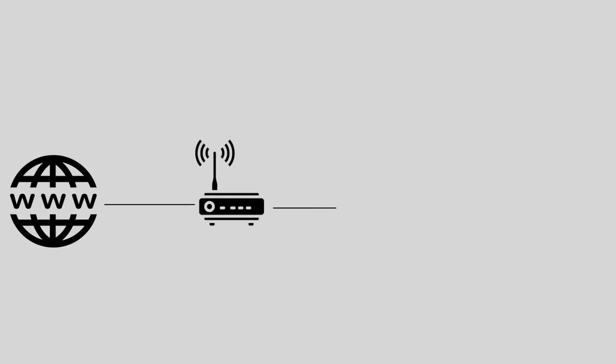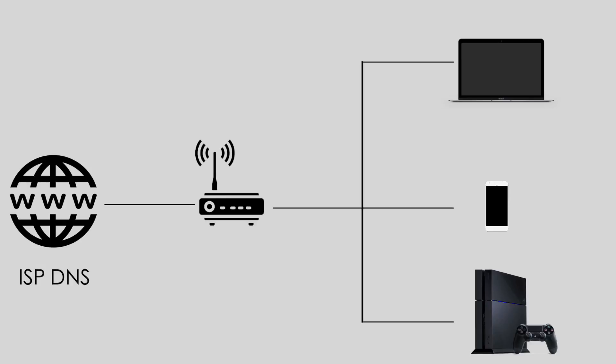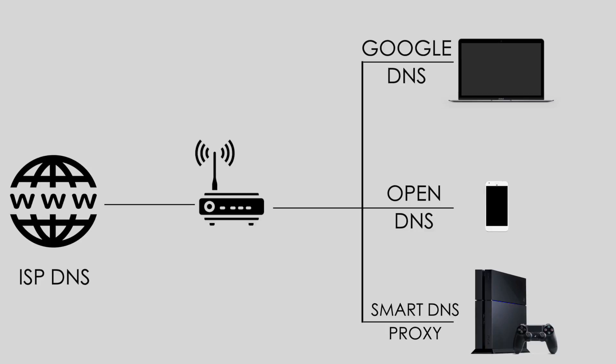Before we get started, I just want to clear one thing that many people find confusing. Assume you have a typical home network where your router is connected to the internet, which further connects to different devices like your computer, smartphone, or other media streaming devices like PS4. By default, you use the DNS server provided by your ISP, but some people change it to Google DNS for better speed, OpenDNS to block adult content, or SmartDNS Proxy to unblock Netflix.